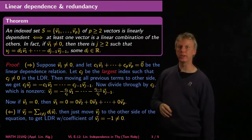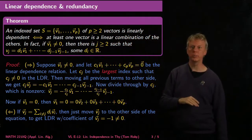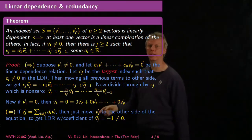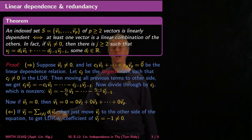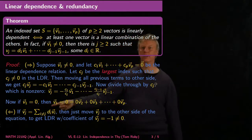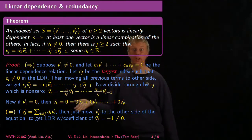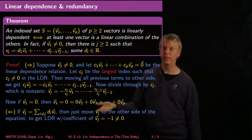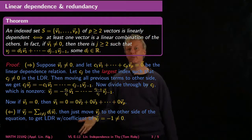Now let's prove the other direction. This is an if-and-only-if statement, so I have to prove it both ways. Assuming that v_j can be written as the sum of d_i·v_i for all i ≠ j — that's writing one vector as a linear combination of the others — I just move v_j to the other side of the equation. That gives a linear dependence relation whose coefficient of v_j is minus one, which is not equal to zero.